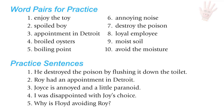Sentences for practice with OI: He destroyed the poison by flushing it down the toilet. Roy had an appointment in Detroit. Joyce is annoyed and a little paranoid. I was disappointed with Joyce's choice. Why is Floyd avoiding Roy?